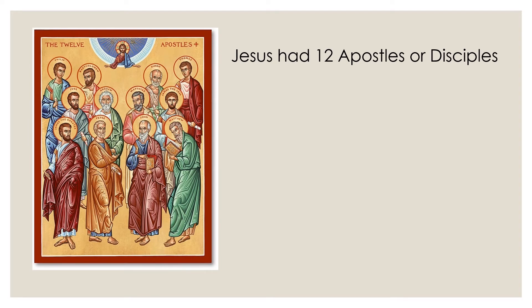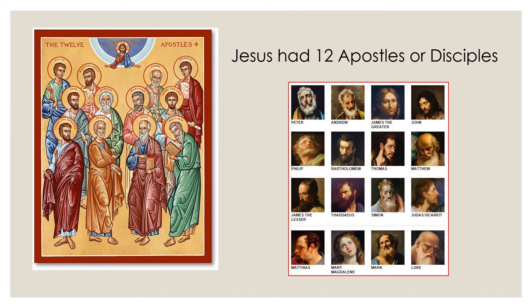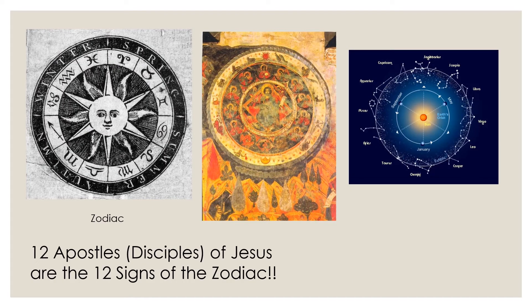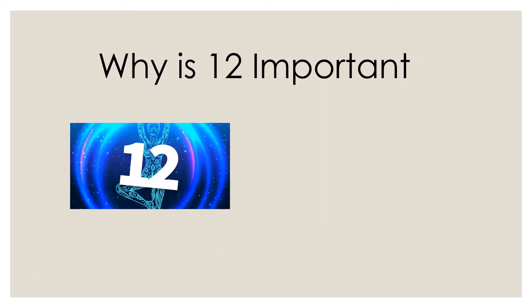When Jesus had 12 apostles or disciples — Peter, Andrew, James, John, and so on — those 12 apostles are the 12 signs of the zodiac. In ancient times, they thought the Sun moved, not the Earth, and the Sun would travel through the 12 signs of the zodiac. Just as the Sun is surrounded by the 12 signs of the zodiac, Jesus is surrounded by his 12 apostles.